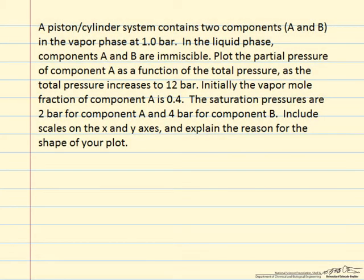In this problem we have a piston and cylinder system with two components. One component is in the vapor phase at one bar, and in the liquid phase these components are not miscible. The problem asks us to plot the partial pressure of just one component as a function of total pressure as the total pressure increases to 12 bar. We start with just a vapor phase, and the vapor mole fraction of component A is 0.4.